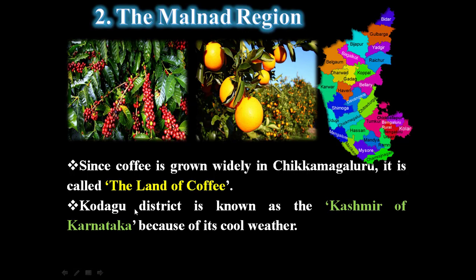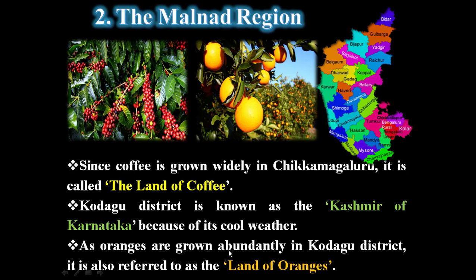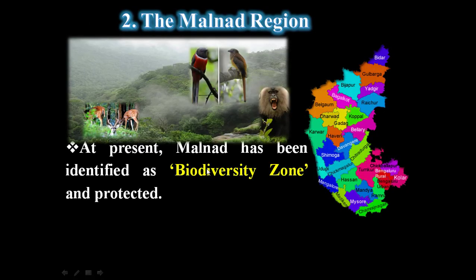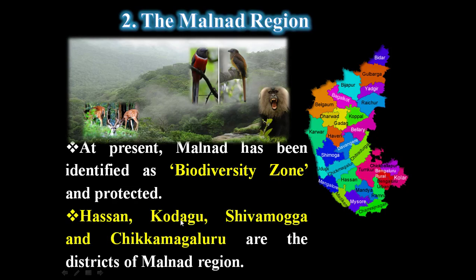Kodagu district is known as the Kashmir of Karnataka because of its cool weather. As oranges are grown abundantly in Kodagu district, it is also referred to as the land of oranges. At present, Malnad has been identified as a biodiversity zone and is protected. Hassan, Kodagu, Shivamogga, and Chikkamagaluru are the districts of the Malnad region.